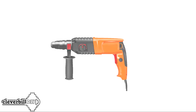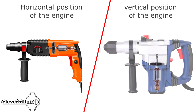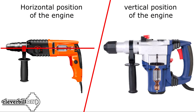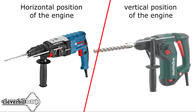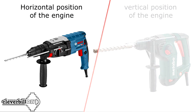The first thing to pay attention to when choosing is the location of the motor in the tool body. The hammer drill motor can be both horizontal and vertical. In the horizontal case, the electric motor has a parallel orientation relative to the impact axis. In the vertical case, the motor axis is perpendicular to the direction of impact, making the tool more massive. Horizontal devices are more practical — they can be used in uncomfortable and narrow openings and tend to be lighter than the vertical version.